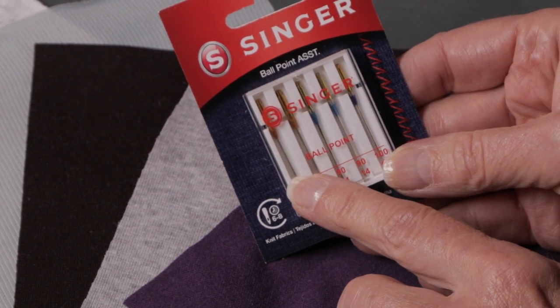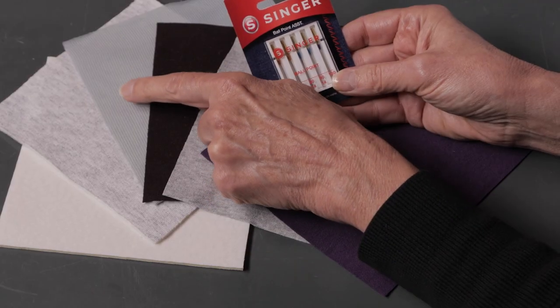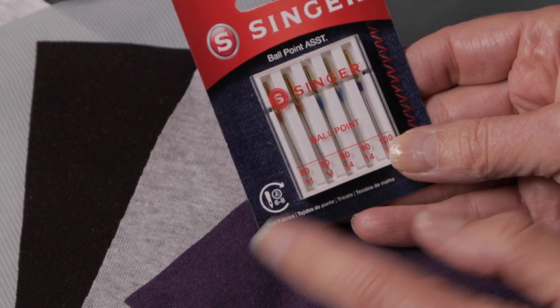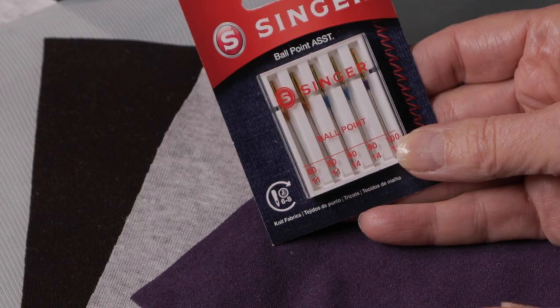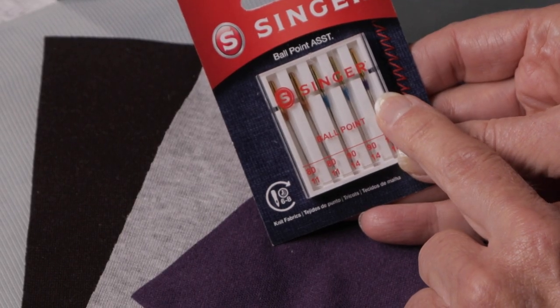The smaller number is the lighter weight needle and you would use those for more like a tricot. The 14 is a medium weight for like your t-shirt fabrics, and the 16 is a heavier weight for maybe like your neoprene or sweatshirt fleece.